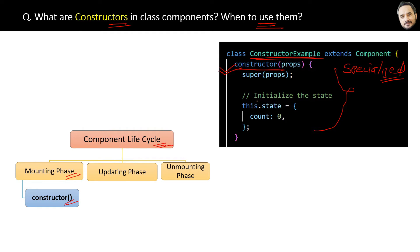The question is: when should we use this constructor in our components? The constructor is used majorly for initializing the component's state or performing any setup that is mandatory before the component is rendered in the UI browser. For example, here we are setting the state — the data count value equal to zero — in the beginning, before the rendering.